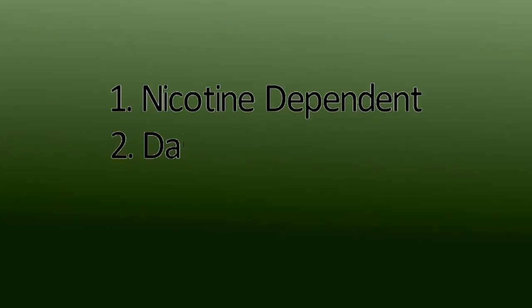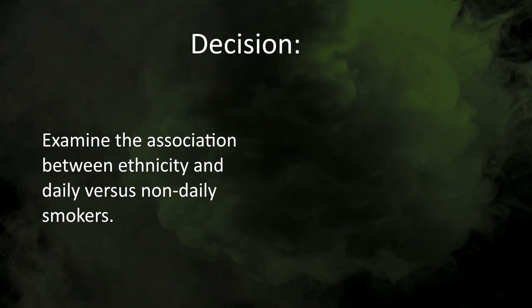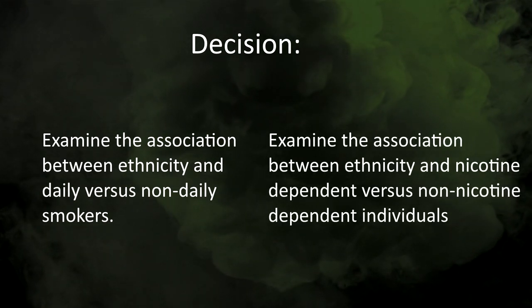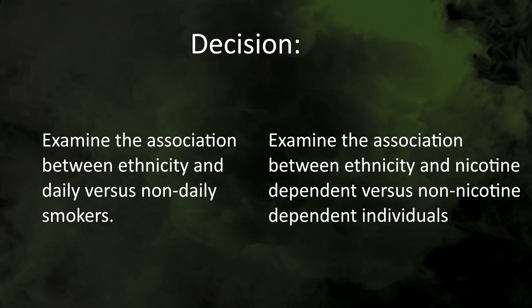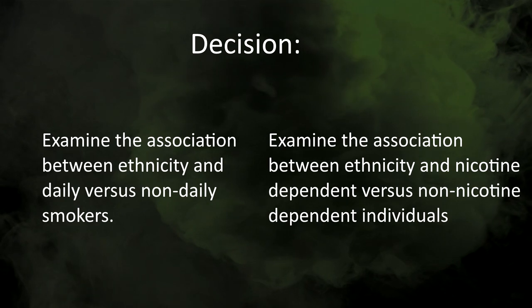This sample can be described with these three smoking categories. This univariate bar chart shows that about 50% of the young adults sampled are nicotine dependent, about 30% are daily smokers without nicotine dependence, and almost 17% are non-daily smokers. However, to examine a relationship between this variable as the response variable and another, we need to collapse this to only two categories. Here are two perfectly reasonable decisions: we could examine the association between ethnicity and daily versus non-daily smokers, or we could examine the association between ethnicity and nicotine dependent versus non-nicotine dependent individuals, thereby collapsing across these categories in some way.